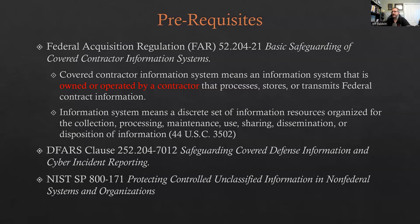More generically, an information system is a discrete set of information resources — those system components when combined together allow for the collection, processing, maintenance, use, sharing, dissemination, or disposition of information. We're specifically talking about covered contractor information systems, not federal information systems that go under FISMA or RMF — those are something separate. We're specifically talking about things governed on the contractor side.